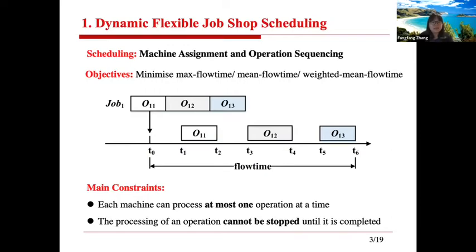In this paper, we consider three objectives: we try to minimize max flow time, mean flow time, and mean weighted flow time. There are also some constraints when we make the schedule. For example, each machine can process at most one operation at a time, and once we start processing an operation, we cannot stop.